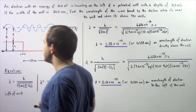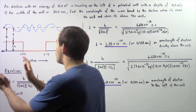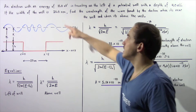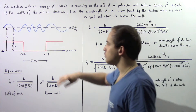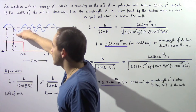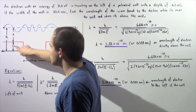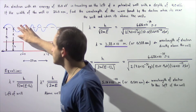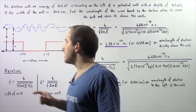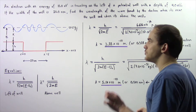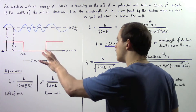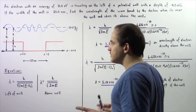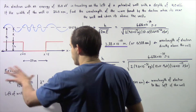When the electron is found either to the left or to the right of our potential well, that electron's energy is given by 10 electron volts. That is given by taking the sum of the kinetic energy K as well as the potential energy U₀ of our particle. Taking the sum of these two quantities gives us the total energy of that electron.